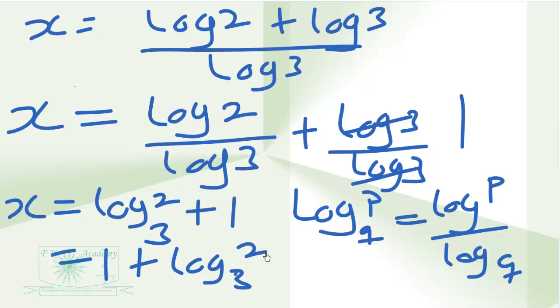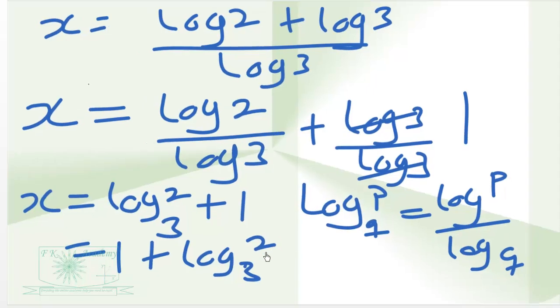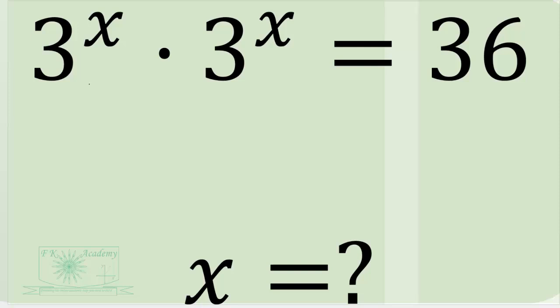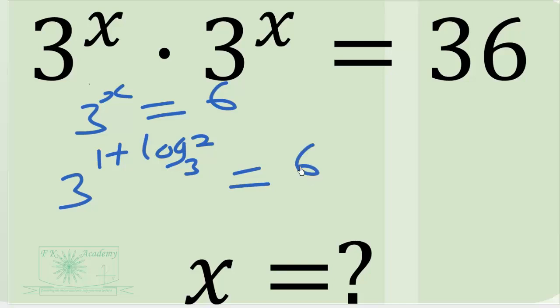Now let's check if it satisfies the equation. So we pick it from here. 3 exponent x is equal to 6. So 3 exponent 1 plus log 3, 2. Is that giving us 6? So we have 3 exponent 1 times 3 exponent log 3, 2.